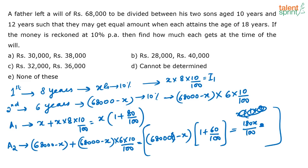When you actually solve it, you get X as 32,000 and 68,000 minus X as 36,000. So the correct answer is option C. The father is giving X rupees to one child and 68,000 minus X to the other. This money is invested in the bank, and when both sons turn 18, the money they get respectively is the same.